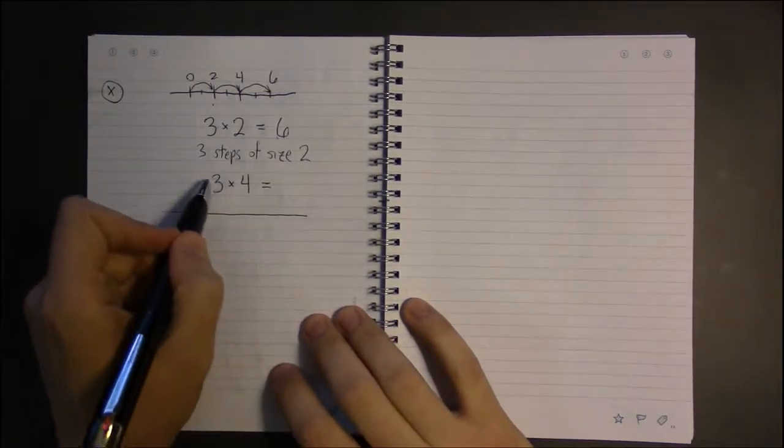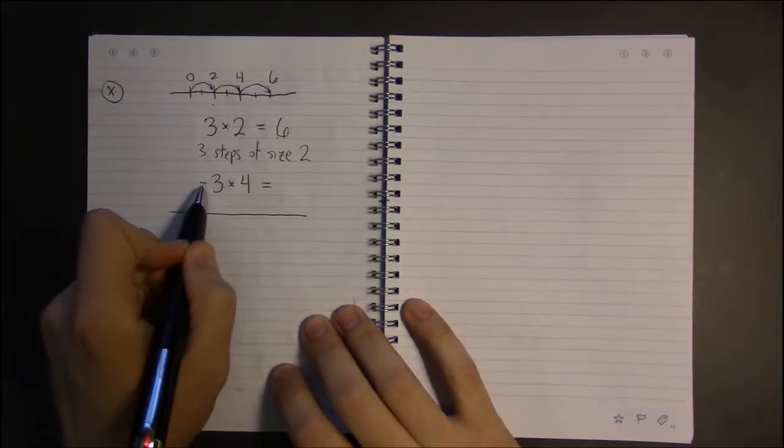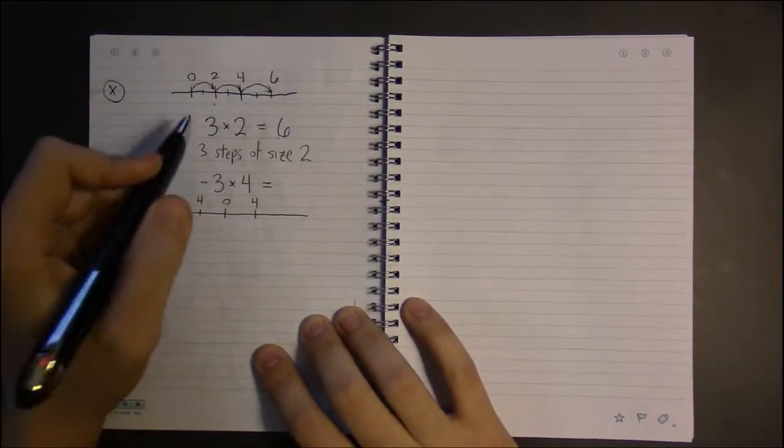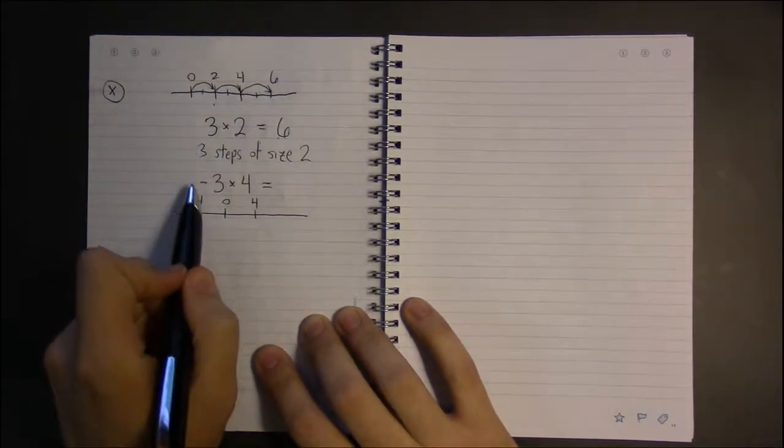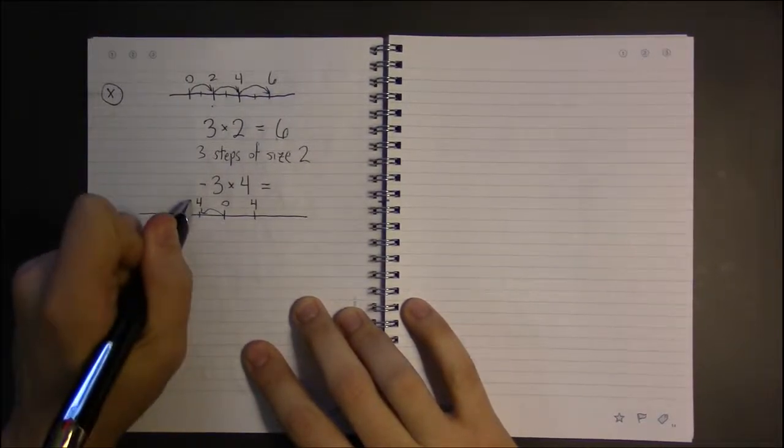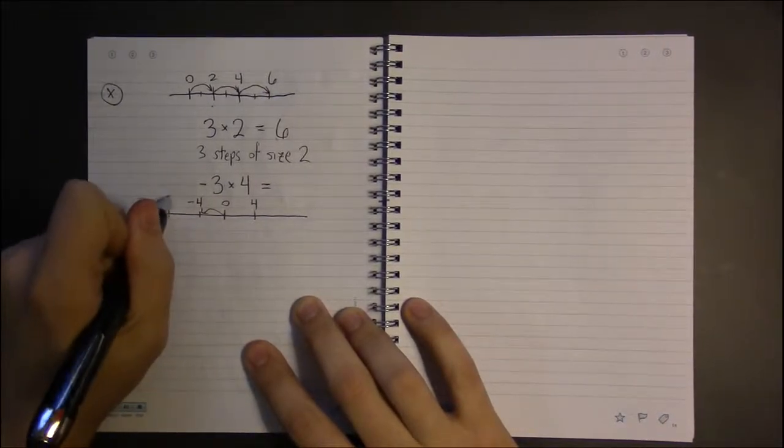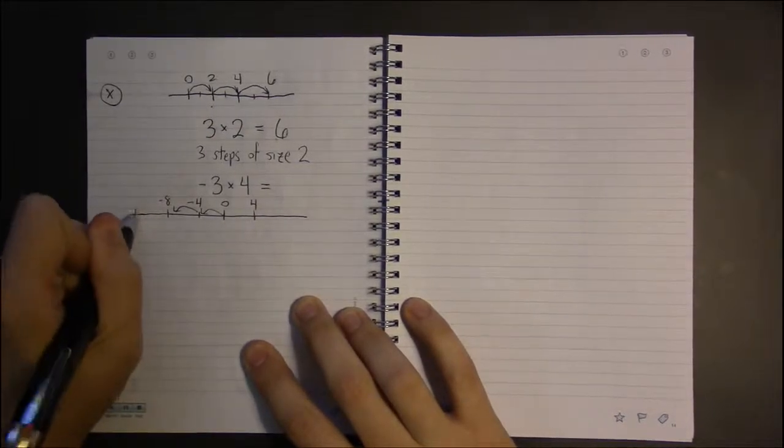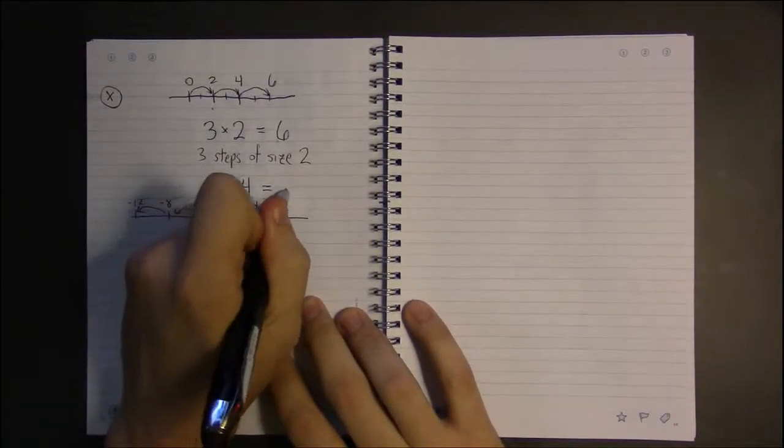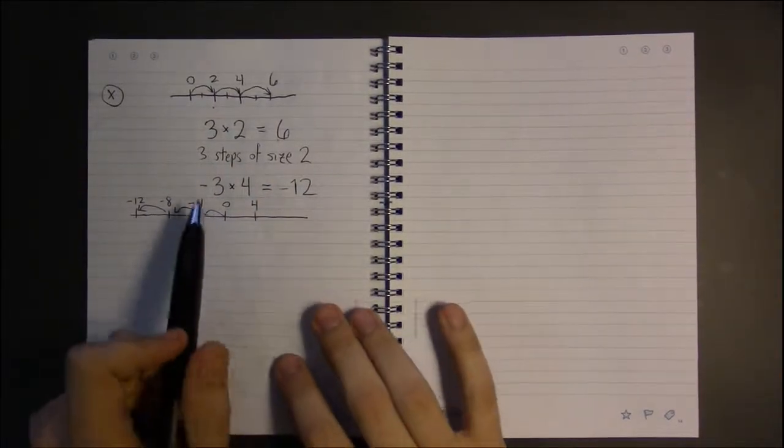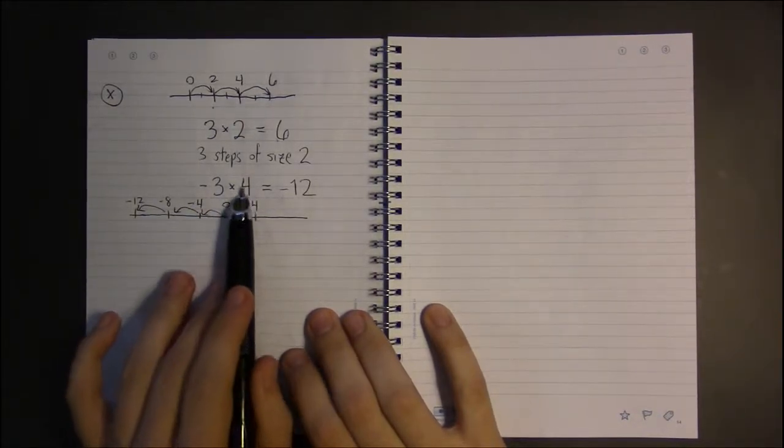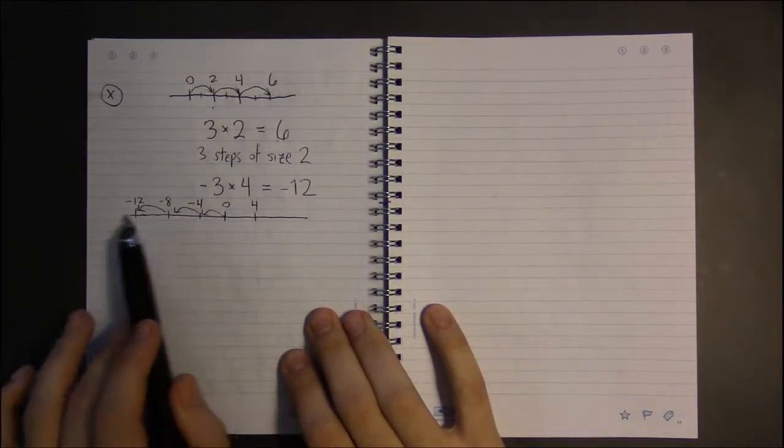Now, how do we handle negatives in this case? Well, negative 3 steps of size 4 would just mean instead of going 3 steps to the right, we're going to go 3 steps to the left. And these are 4 steps. So, we're going to go from 0 to minus 4, minus 4 to 8, and then minus 8 to minus 12. And that lands us on our answer. So, the first number tells us how many steps to take, to the left or to the right. And the second number tells us, well, what size of a step are we taking?